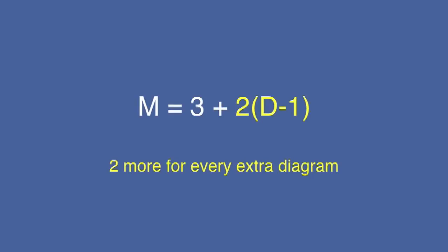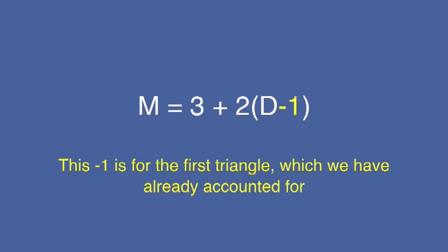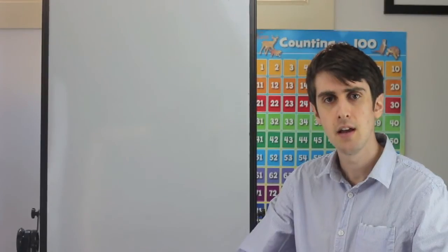Now, we get these matchsticks by multiplying two by the number of the diagram minus one. The reason we minus one is that we've already accounted for the first diagram by adding three at the start of the formula. Now, let's have a look at all the information we've been given and see if our formula works for all of the diagrams.